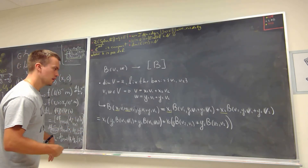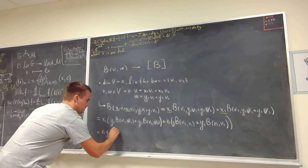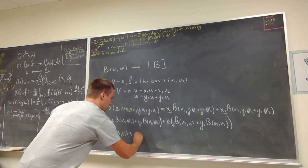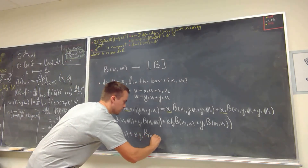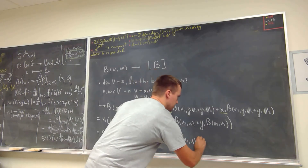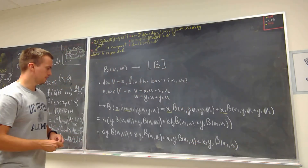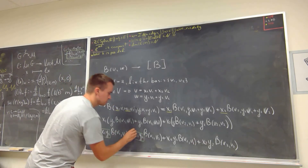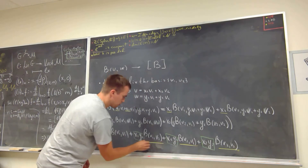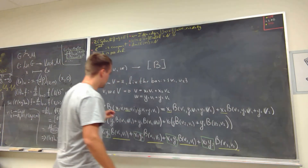After fully expanding, I obtain: X1·Y1·B(V1,V1) + X1·Y2·B(V1,V2) + X2·Y1·B(V2,V1) + X2·Y2·B(V2,V2). Each of these entries is a scalar multiplied by the corresponding evaluation of the bilinear form on the basis vectors. The question is now how to obtain the matrix from this expression.